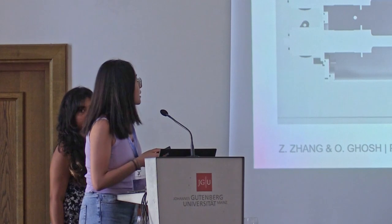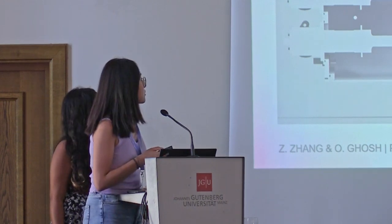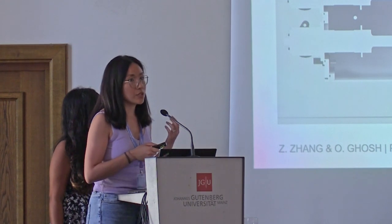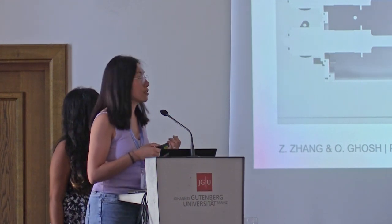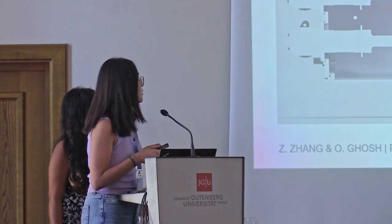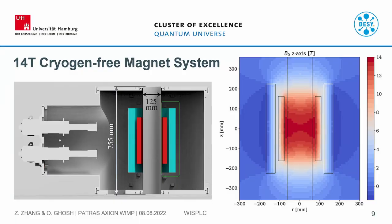This is our magnet. It is a 14 Tesla cryogen-free magnet system. It has a room temperature bore which is 125 millimeters in diameter and 755 millimeters in length, and the rest of the magnet is at cryogenic temperature. On the right-hand side is a simulation of the magnetic field. We can see that in the center it reaches 14 Tesla. A more detailed simulation is presented in the poster session by Johannes.